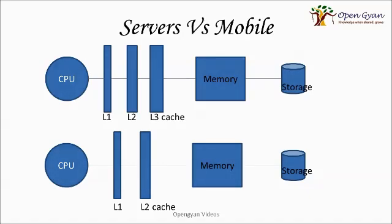In the last videos, we discussed about von Neumann architecture and the parallels between servers and mobiles. In this slide, we will discuss how memory is aligned in both. We have CPU registers, level 1, level 2, and level 3 caches in computers, then RAM and storage. Similarly, in present-day smartphones, we have CPU registers, level 1 and level 2 caches, then memory and storage. The hierarchy goes from fastest to slowest and smallest to biggest.